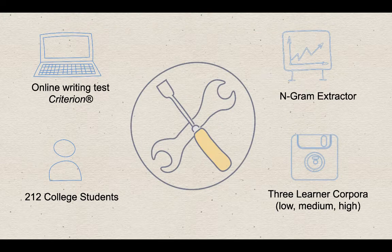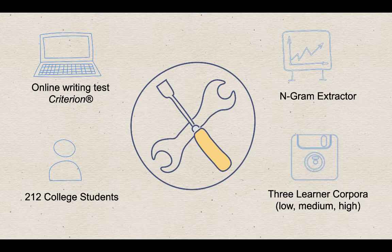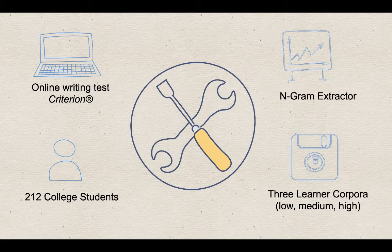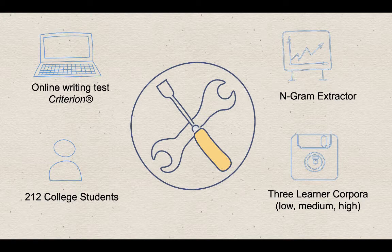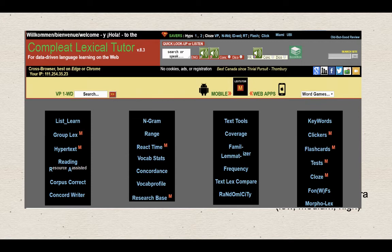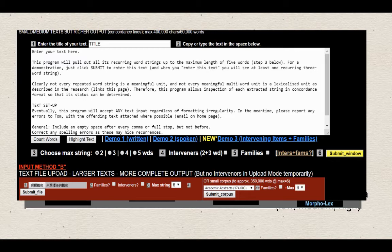For the methodology in this study, a total of 212 essays written by Taiwanese college EFL students through an online writing program called Criterion were collected. Participants consisted of students from English majors at two public universities. The instrument was an N-Gram Extractor from the website LexTutor, which helped us extract and identify Lexical Bundles. We designed three learner corpora based on the scores that students received: lower level, median level, and higher level. The picture shows the website LexTutor, which has many functions for helping learn English, and the N-Gram Extractor screen.